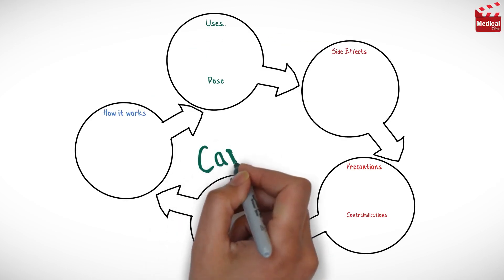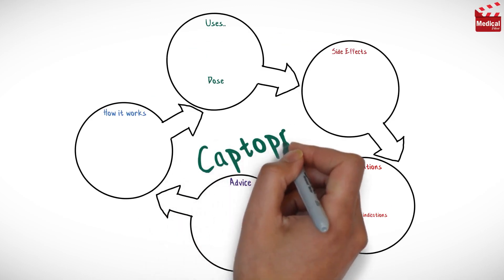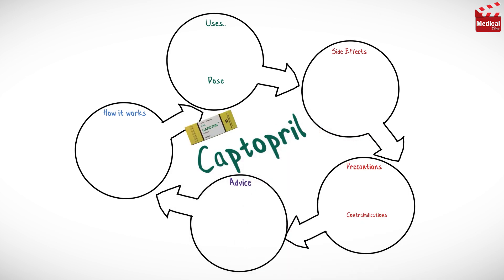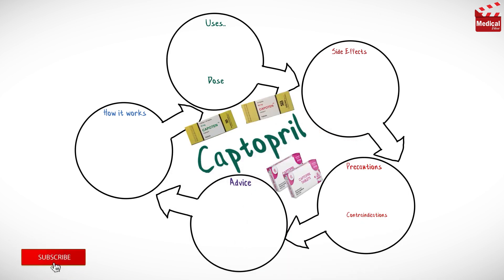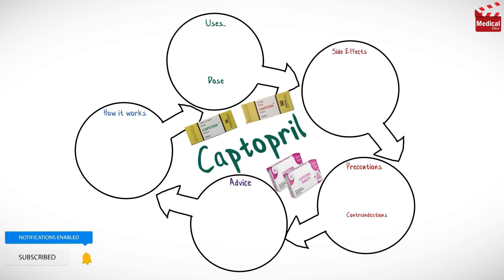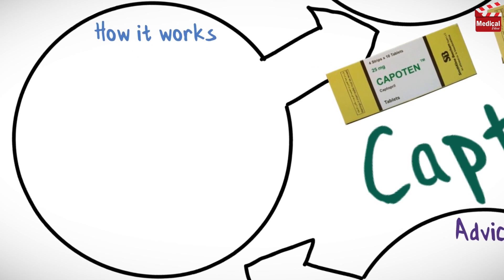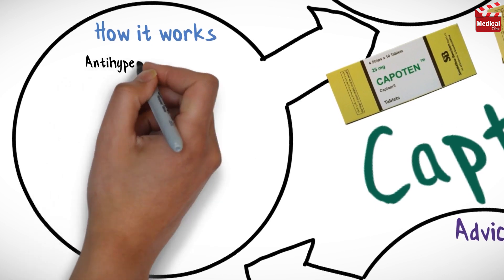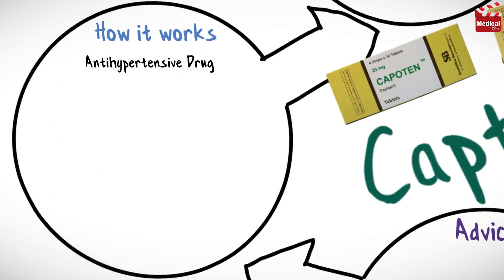In this video we'll briefly discuss what captopril is, how it works, what it's used for, the dose and side effects, drug interactions, contraindications and precautions. Captopril is an antihypertensive drug belonging to a category of drugs called angiotensin converting enzyme inhibitors.